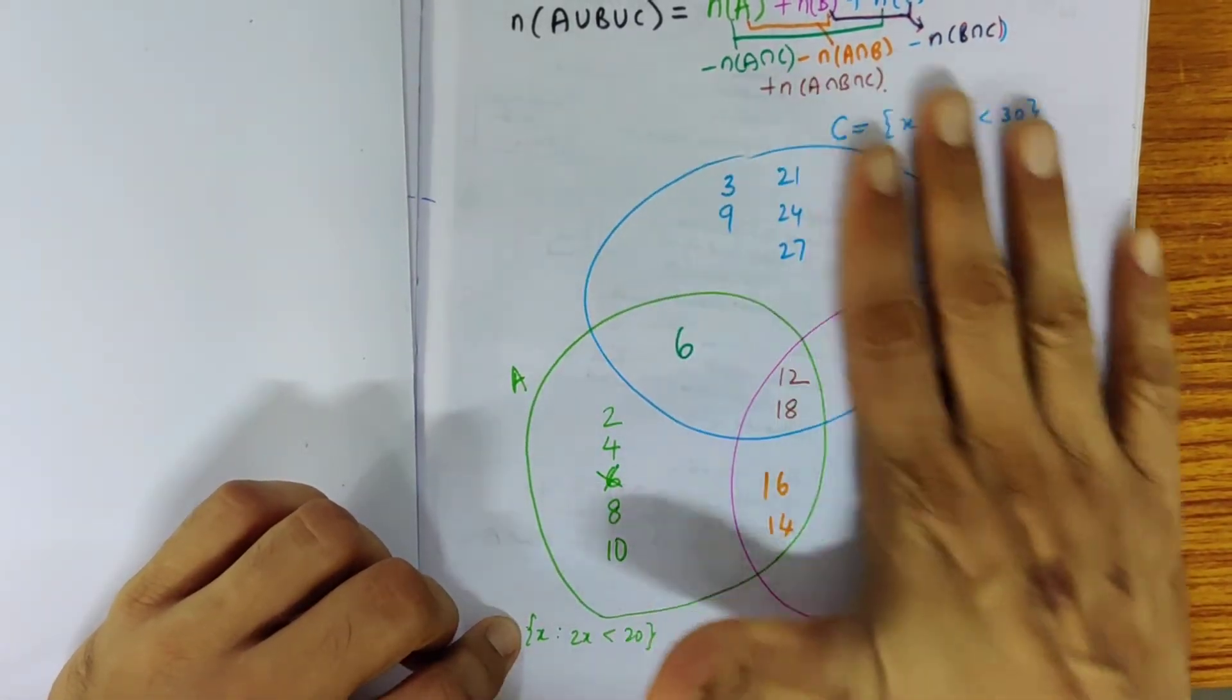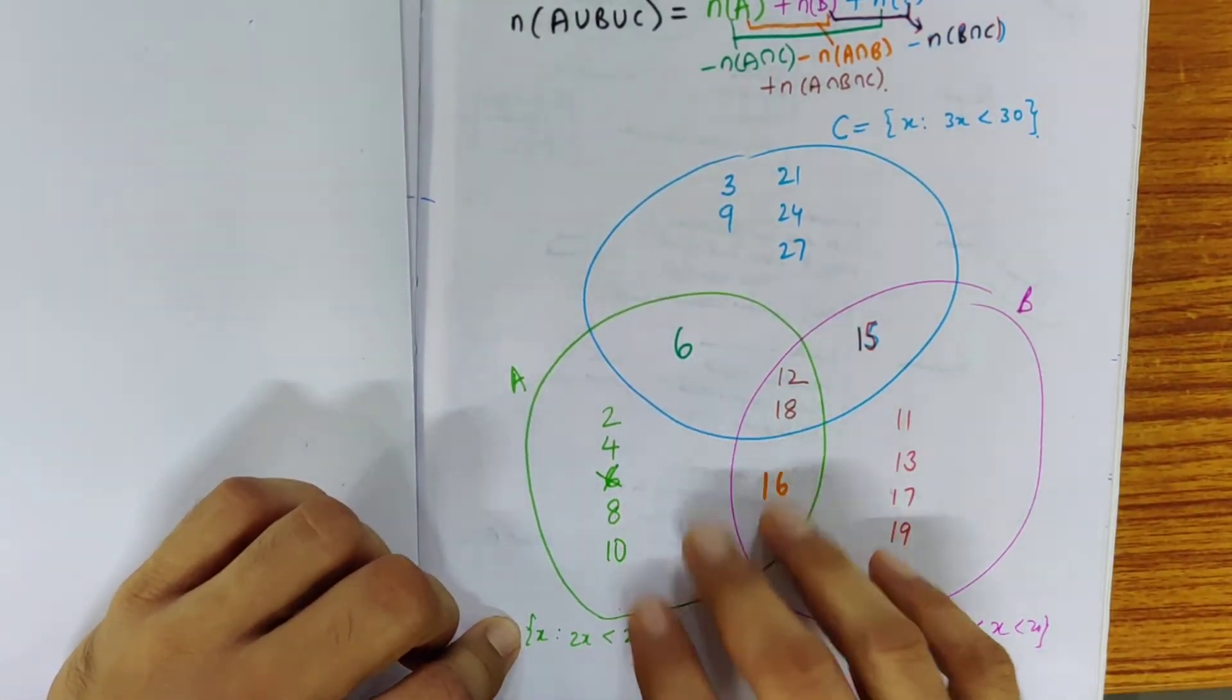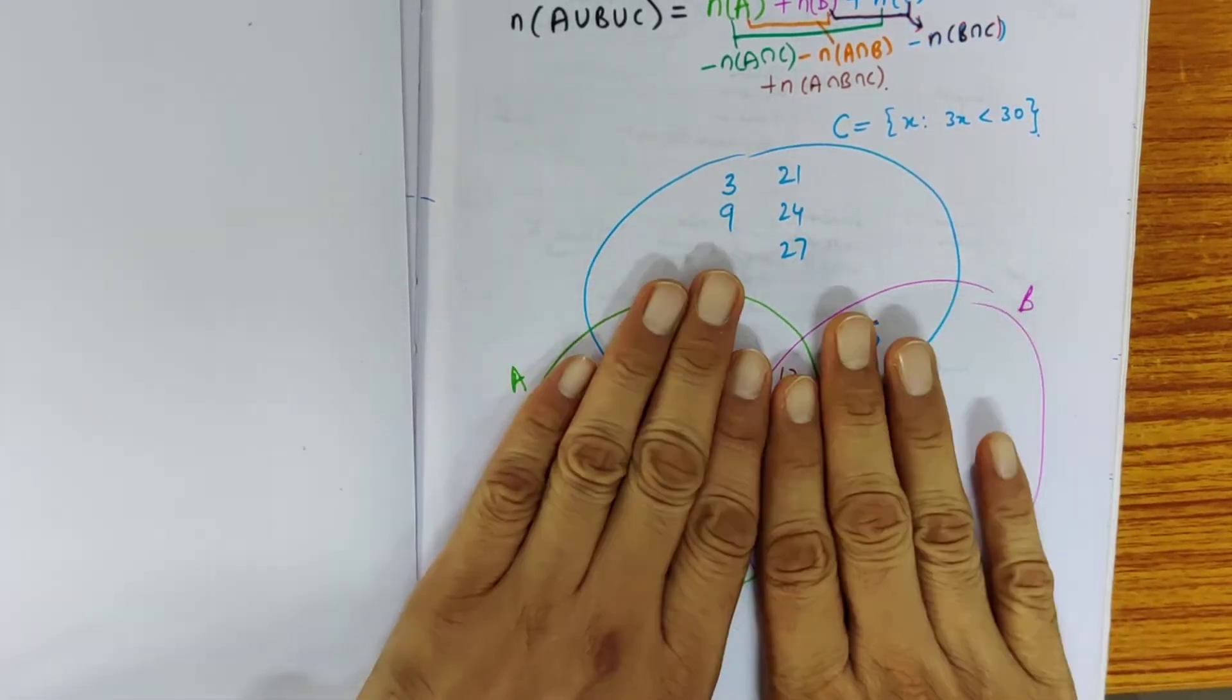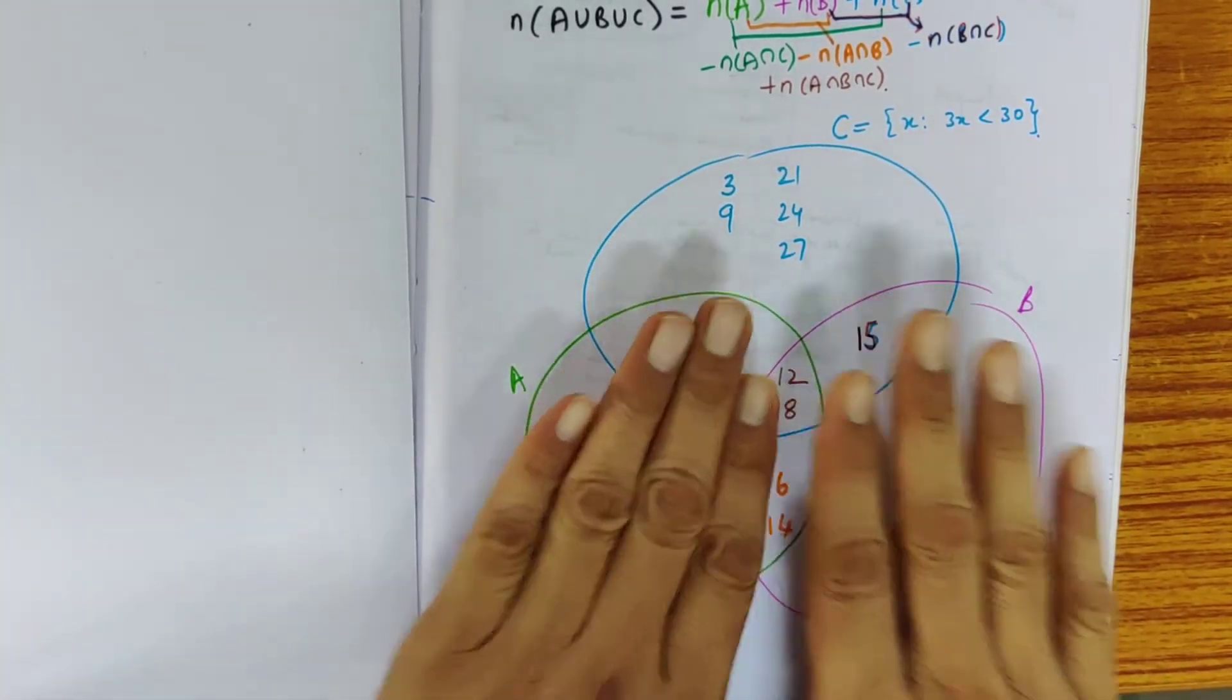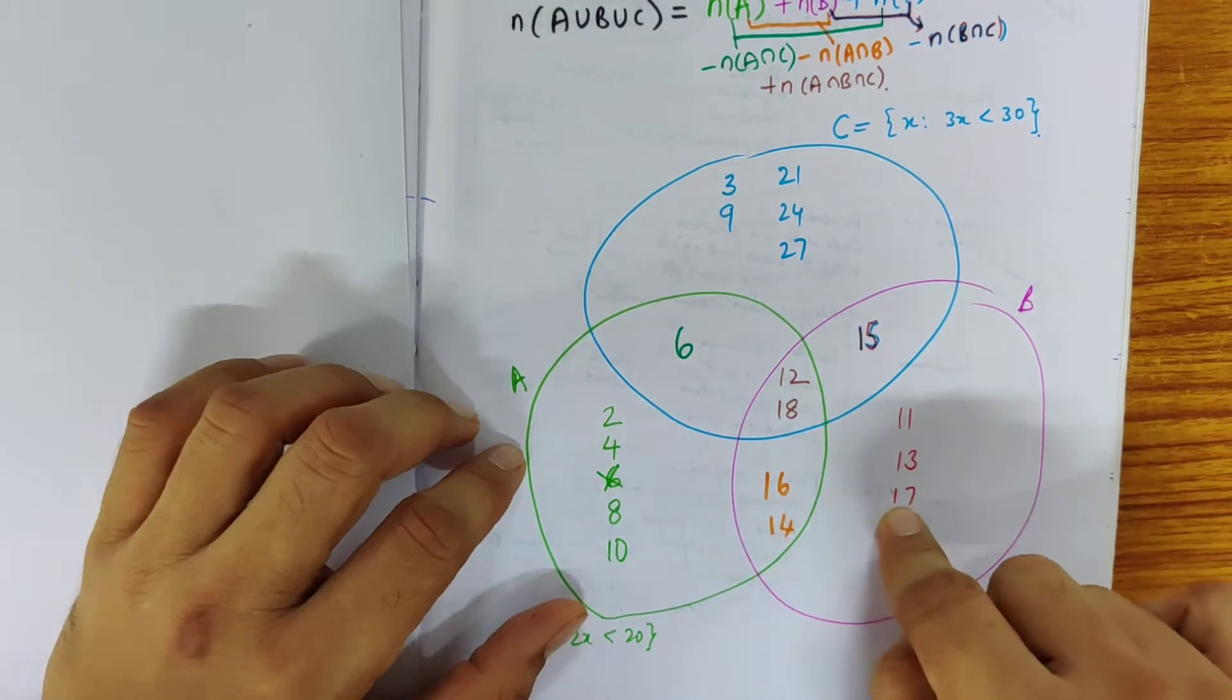So if we look at the cardinality of 3 sets, now 3 sets are going to have of course overlap possibly between 2 sets but also overlap between all 3 sets.